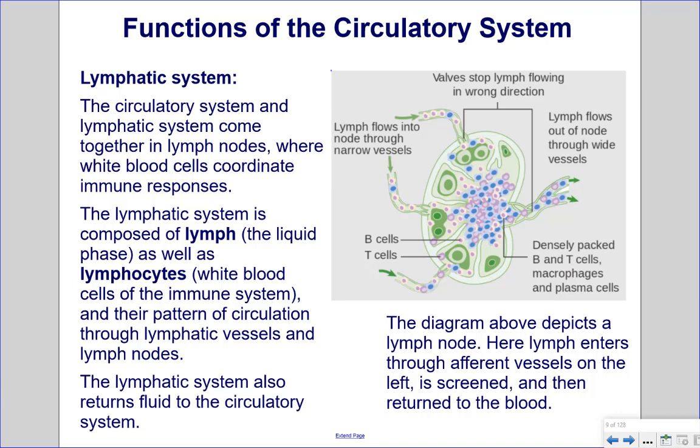The diagram depicts a lymph node, where lymph enters through afferent vessels on the left, is screened, and returned to the blood.